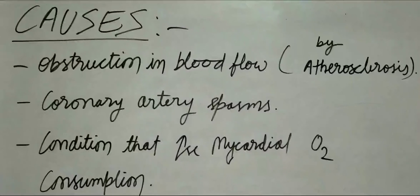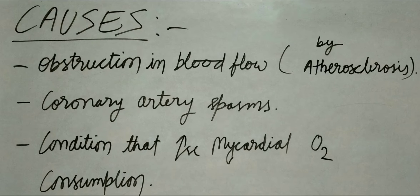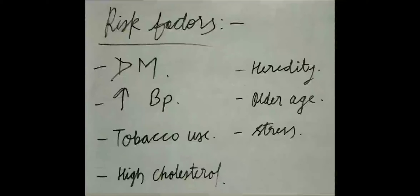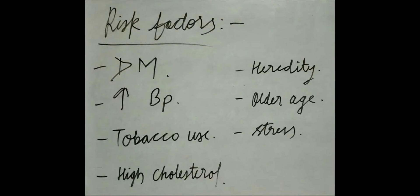The second cause is coronary artery spasm, and the third one is conditions that increase myocardial oxygen consumption. Risk factors of Angina Pectoris include diabetes mellitus, increased blood pressure, tobacco use, high cholesterol level, hereditary factors, older age, stress, and others.